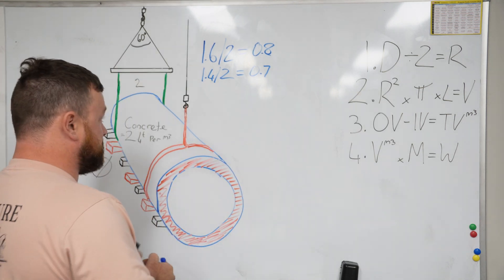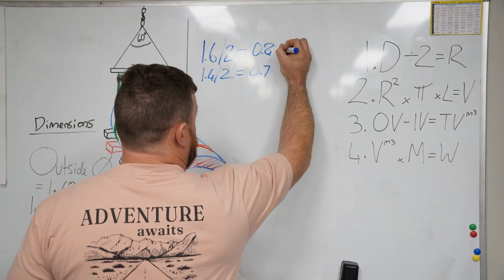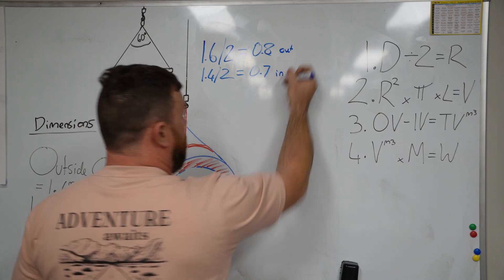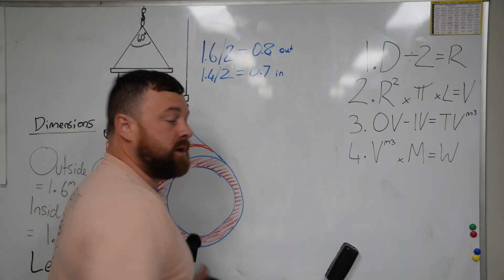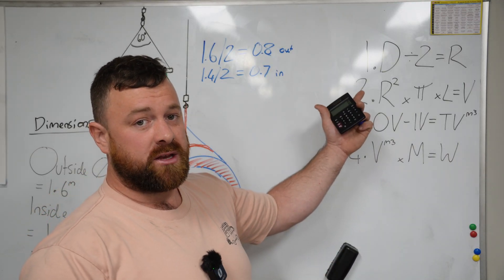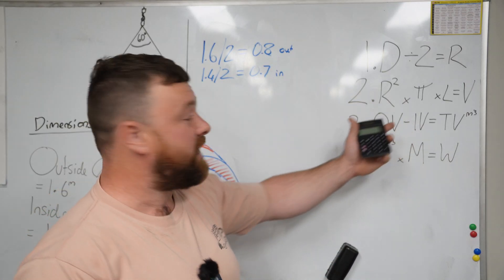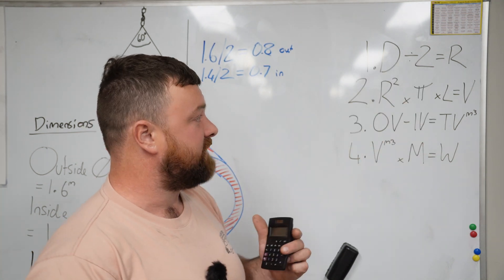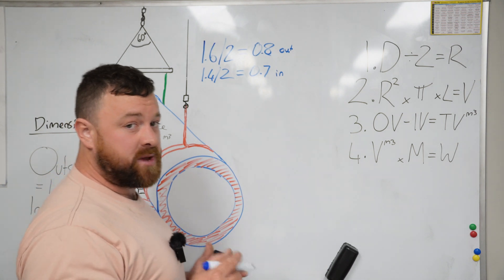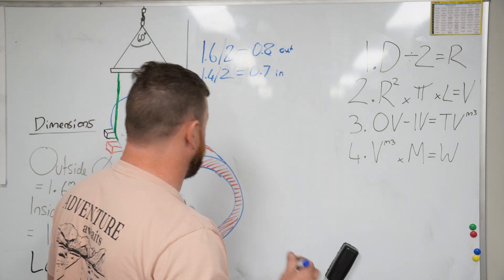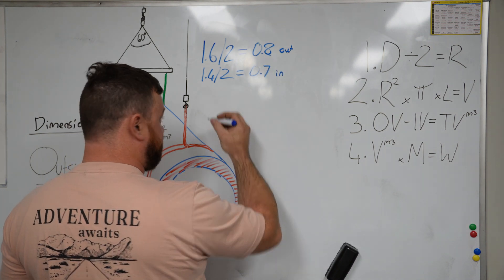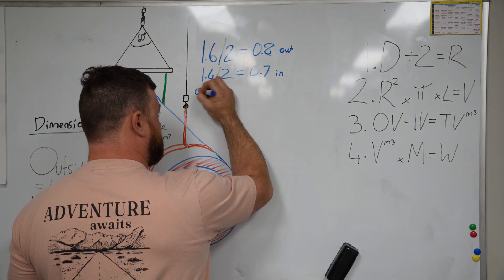So that's outside, that's inside. We need to do these twice—that's the first part of our formula. Now we want to do the second part. We want to square our radius, multiply it by pi, and then multiply it by length, and that'll give us our volume. Write it out on a piece of paper before you do it into the calculator is my recommendation. We'll do this twice for outside and inside radiuses.